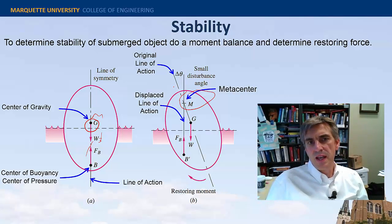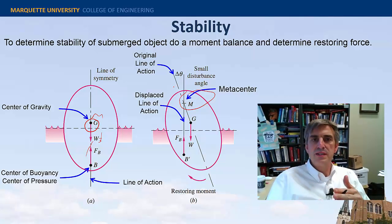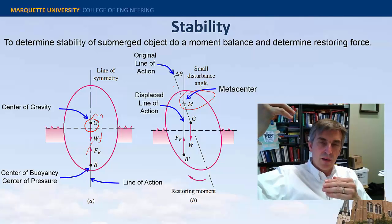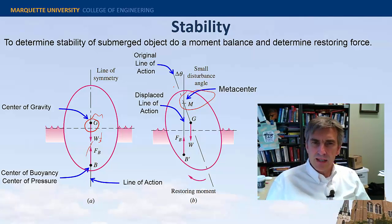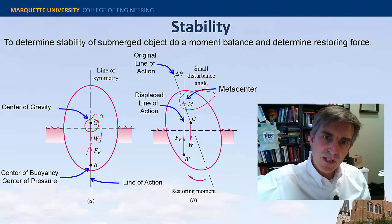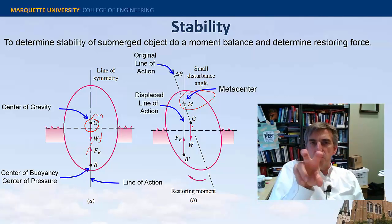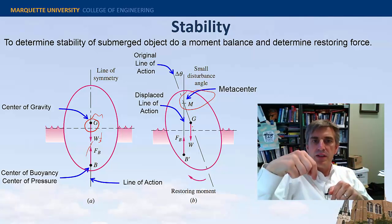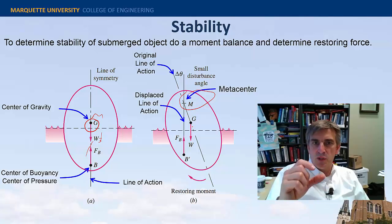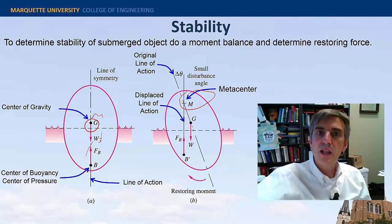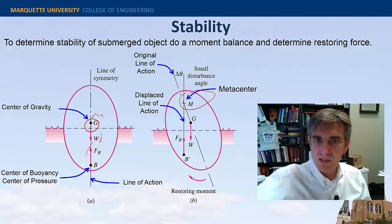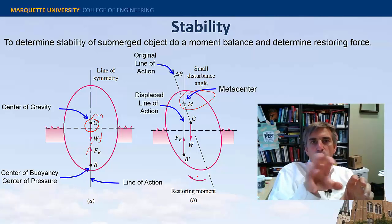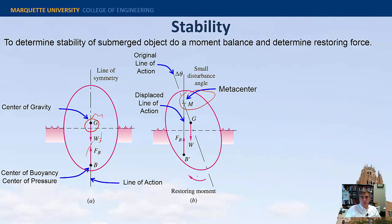The long and the short of it is, this floating object will be stable if M, the metacenter, is above the center of gravity. You can kind of see this, and if you imagine these two vectors acting as a moment, what's the resultant moment of the gravity and the buoyancy force? It appears to me that the resultant moment would be counterclockwise, so this resulting moment would be counterclockwise, and it would tend to right this egg back into its initial position.